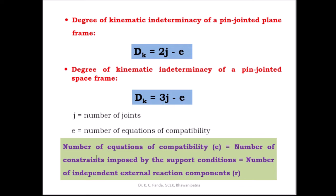The number of compatibility equations is equal to the number of constraints imposed by the support conditions, which equals the number of independent external reaction components. Each reaction component constrains against a displacement. Therefore, the number of compatibility equations equals the number of independent external reaction components.